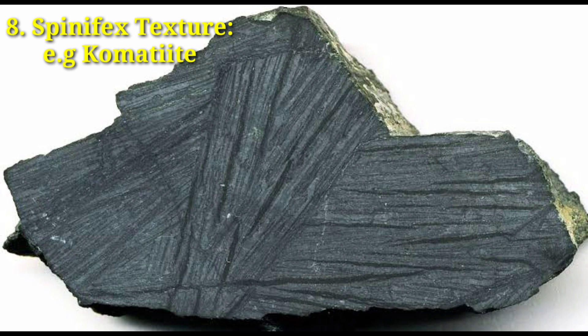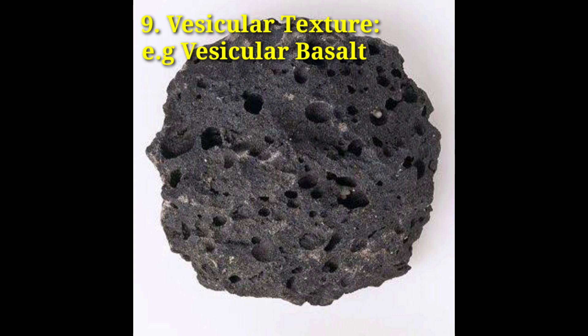9. Vesicular texture. Vesicular basalt. Rocks with vesicular texture are full of bubbles. It always indicates a volcanic rock, like this scoria.